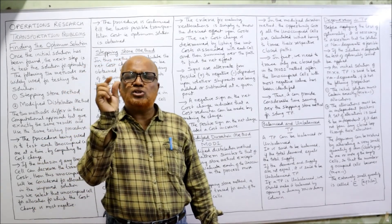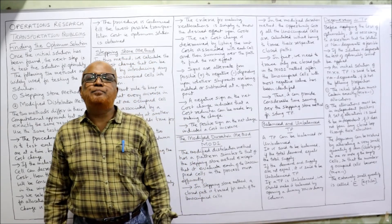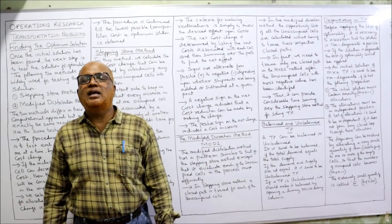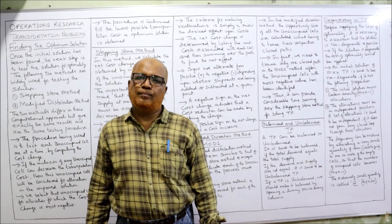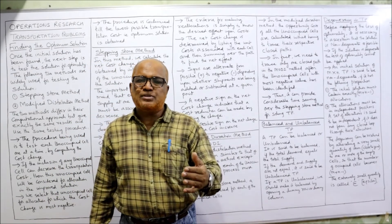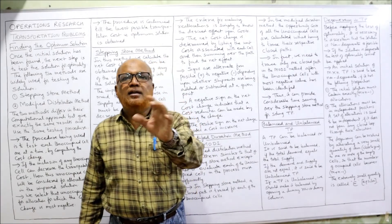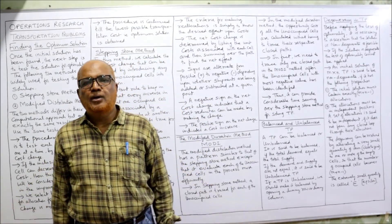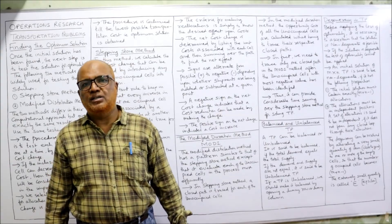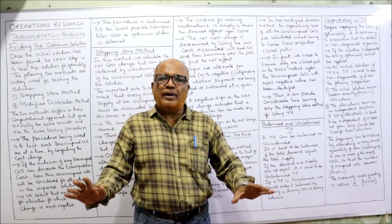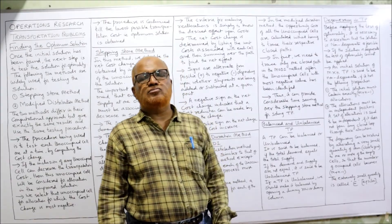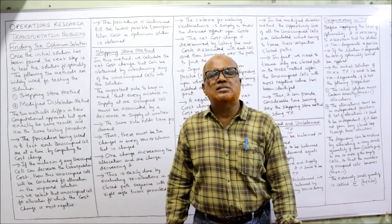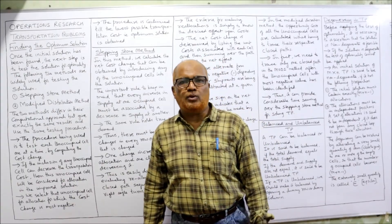To summarize: the two conditions for non-degeneracy are — first, the number of allocations must equal M + N − 1; second, all allocations must be independent. If the problem is degenerate, we must resolve the degeneracy. How to resolve it: apply an allocation with a small quantity epsilon in any one of the unoccupied cells. By adding epsilon, the number of allocations becomes equal to M + N − 1, and in this way we can overcome and resolve the degeneracy.